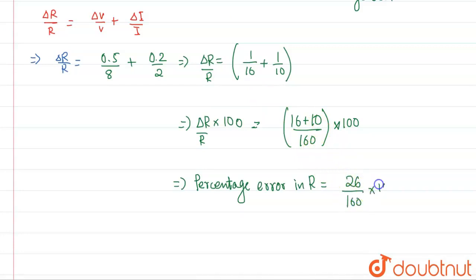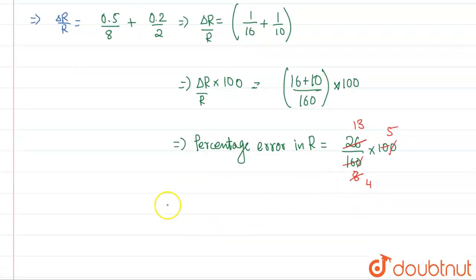This will be equal to 26 by 160 into 100. So basically we will cancel the 100, the 0 will cancel to 0, and this will cancel to this. This will give 5, this will give 8, and lastly we'll cancel this with 2. So this will give 13 and this will give 4.